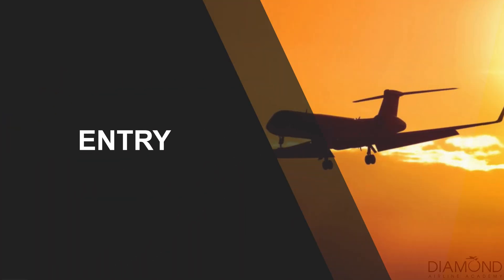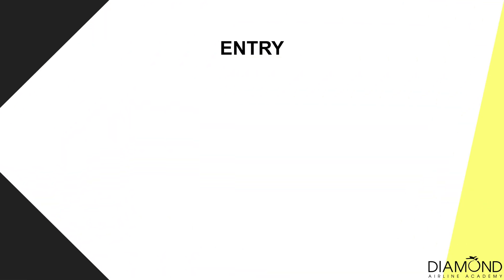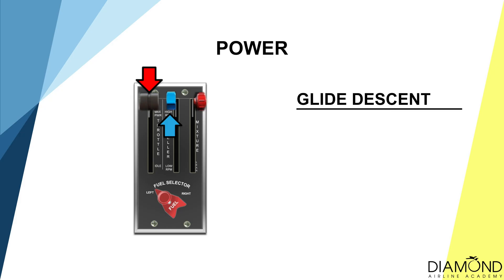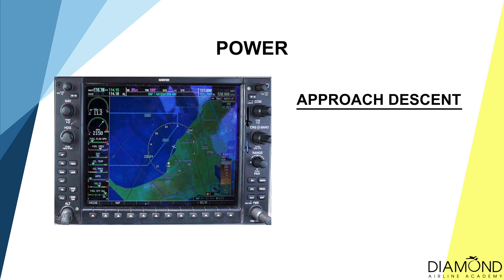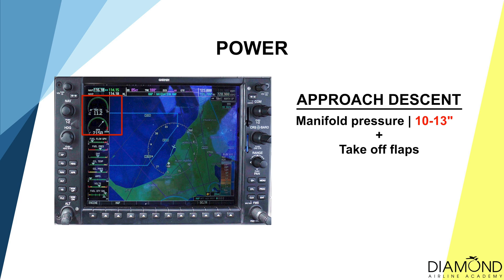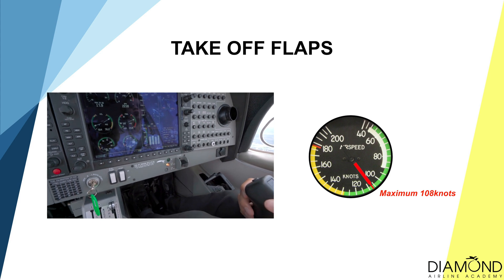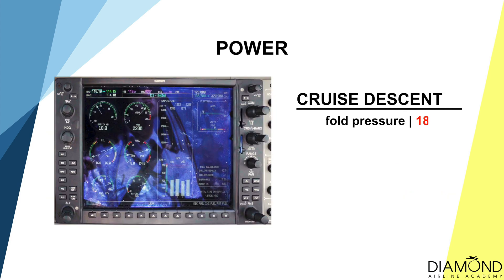The entry cycle work cycle is PAST. P — Power: depending on what type of descent we're doing, we have different power settings. For a glide descent, bring the power all the way back to idle. For an approach descent, pull the throttle back to 10 to 13 inches of manifold pressure, along with takeoff flaps — don't forget to check speed before lowering the flaps; speed must be below 108 knots. For a cruise descent, bring the throttle back to around 18 inches of manifold pressure, with a desired performance of 500 feet per minute vertical speed.